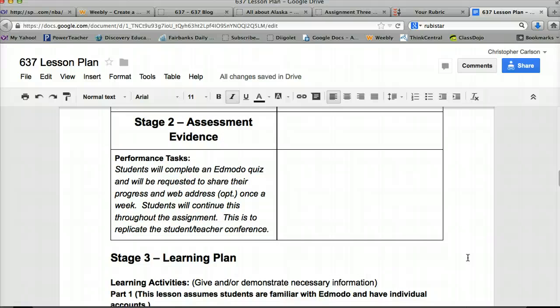So, assessment evidence. Students will complete an Edmodo quiz and will be requested to share their progress and web address once a week. Students will continue this throughout the assignment. This is to replicate the student teacher conference. And as this project goes, it's going to start getting the same feel as a writer's workshop. It's kind of like a website workshop, as some students are going to progress faster than others. But we still have the same elements, such as the conferences, the drafts. Writing is creating. And so is building videos and using the ShowMe app. Those are all creating as well. And so we want to use that same format.